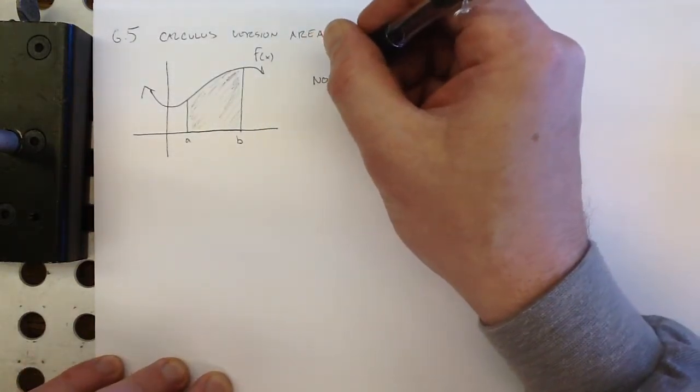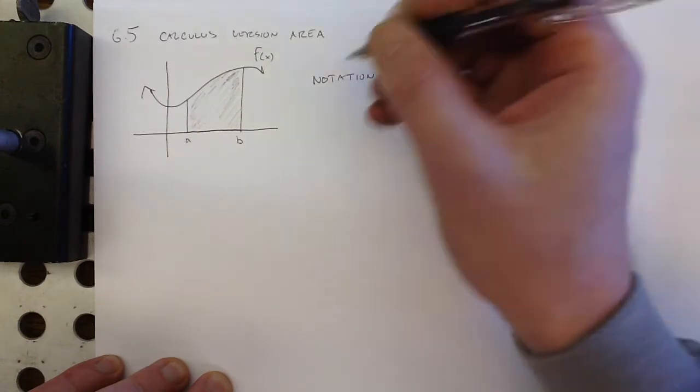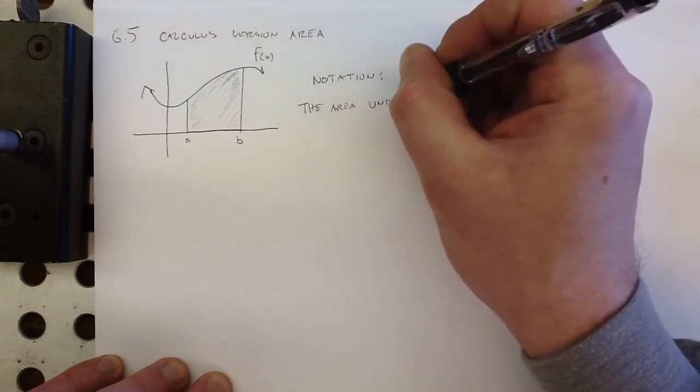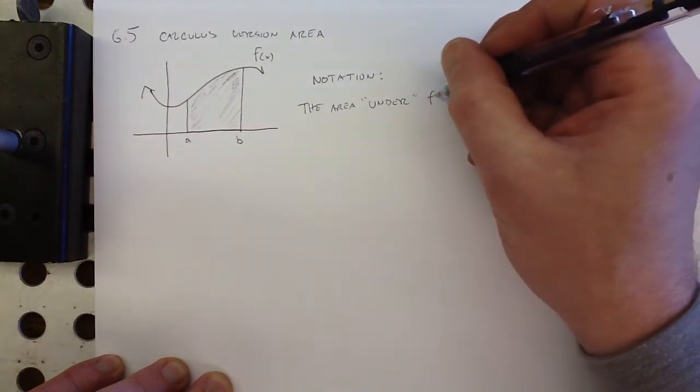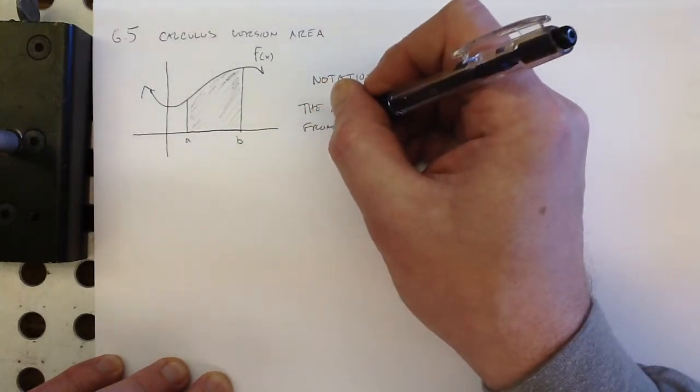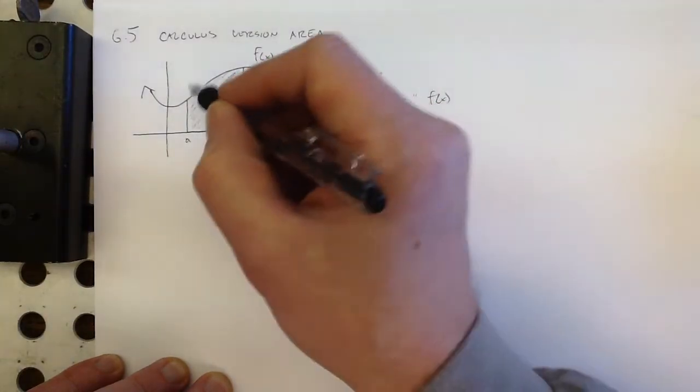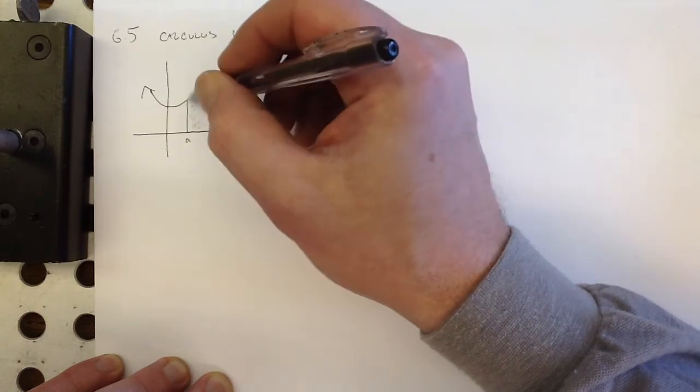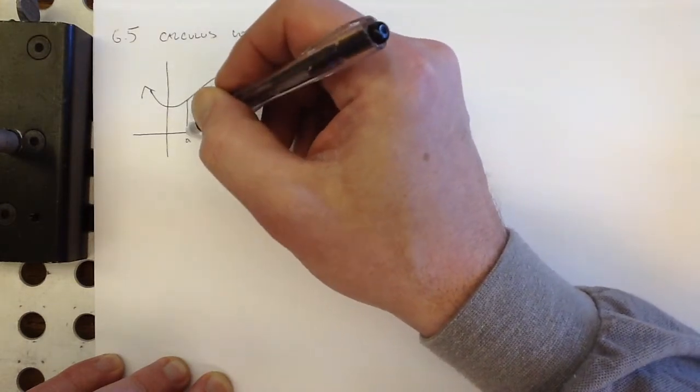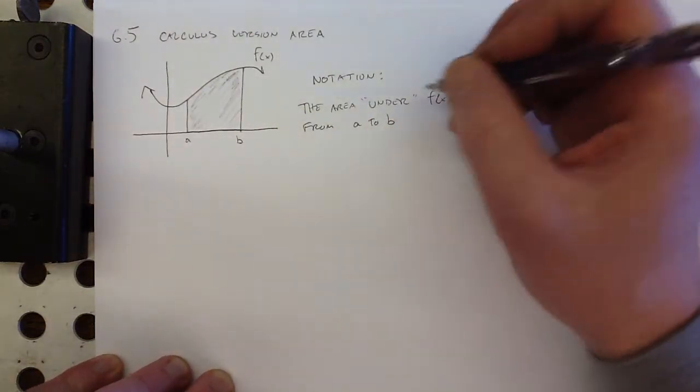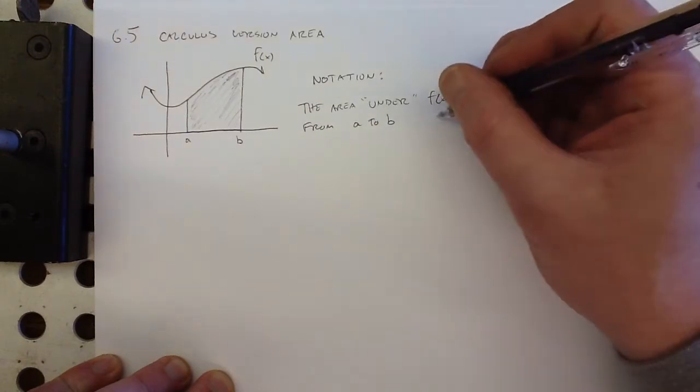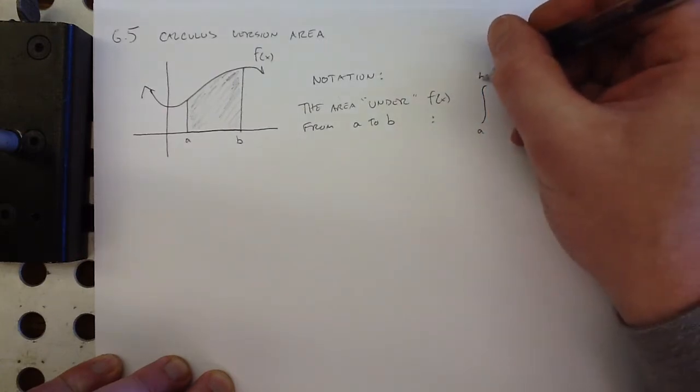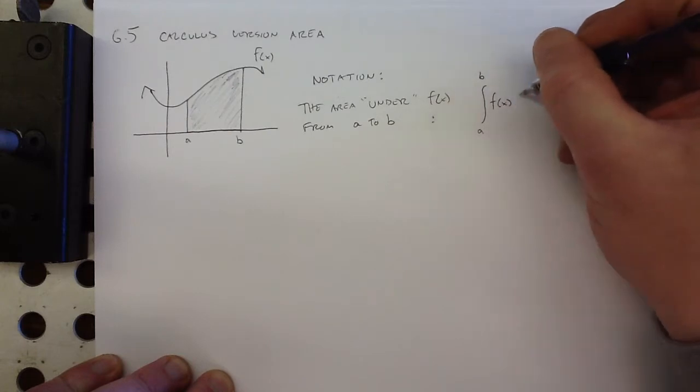So let me show you what that notation looks like. The area under f of x from a to b - and when we say the area under the curve, that means between the curve and the x-axis - wherever the curve is, you drop straight down to the x-axis. We write that like this: an elongated s from a to b of f of x dx.